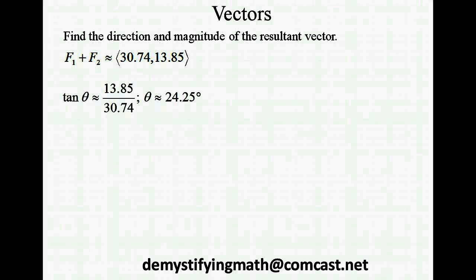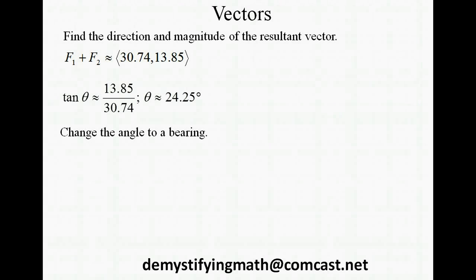Now that we've found the sum of the two vectors, let's find the direction and magnitude of the resultant vector. So if you're looking at finding the angle you're just going to divide y over x and set that equal to the tan of theta. Remember the tan of theta is equal to the opposite over the adjacent. So we get an angle measure around 24.25 degrees. We're going to go ahead and change our angle to a bearing because our information was given as a bearing so we should give our answers as a bearing. So that's going to be north 65.75 degrees east.